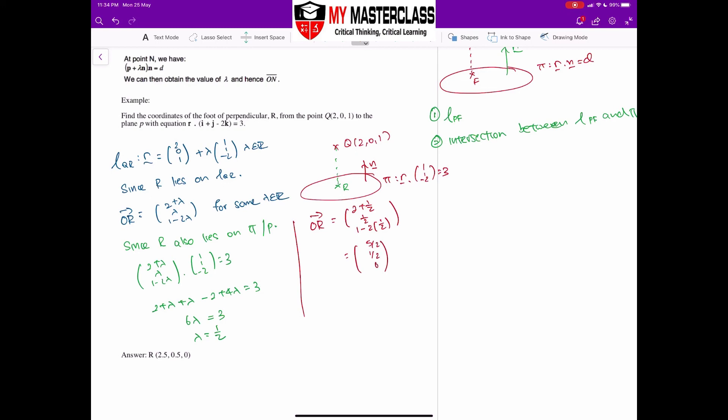You can either leave it in fraction or decimal, personally I prefer to leave it in fraction, however decimal is acceptable as well. Take note, the question they asked for coordinate, but not the position vector. So I need to change my position vector down to coordinate form. Never write from a position vector, immediately convert it to coordinate, you have to write a separate line. So in this case, R will then be equal to (5/2, ½, 0) is my answer.